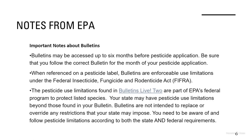The state may have pesticide use limitations beyond those in the bulletins. The Department of Agriculture has posted notices on their website about endangered species, so you always want to make sure you review those. You also want to look at the 24(c)s so you can be aware of any type of pesticide limitations within our state.